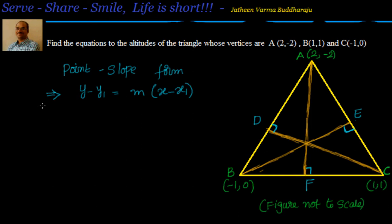Here's how we leverage the point-slope form: suppose we want the altitude from A onto BC. We have points B and C with known coordinates, so we can find the slope of BC. Since altitude AF is perpendicular to BC, the slope of AF is the negative reciprocal of BC's slope. We know the line passes through A, which is (2, -2), so we can find AF, BE, and CD equations.